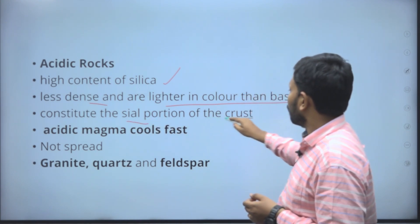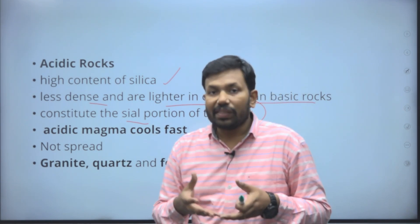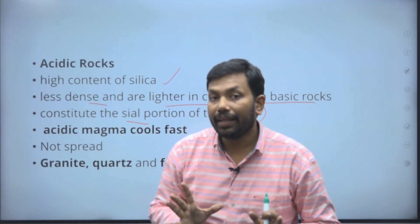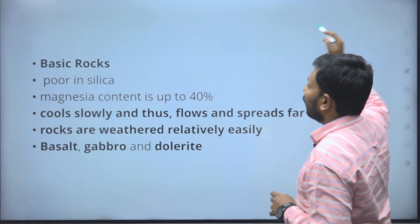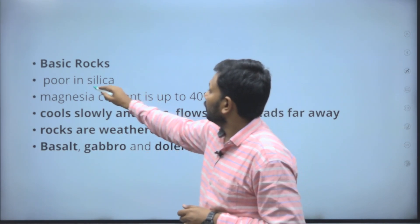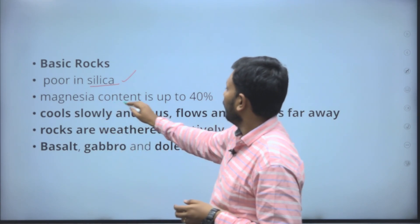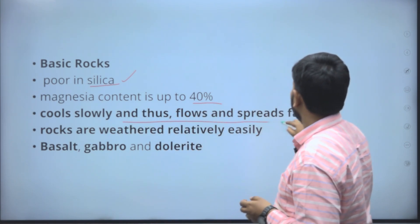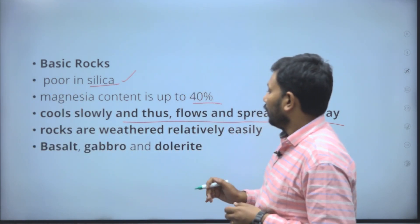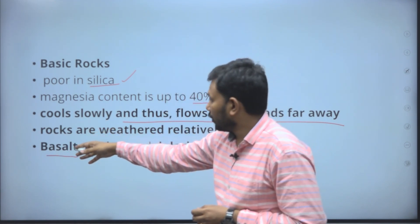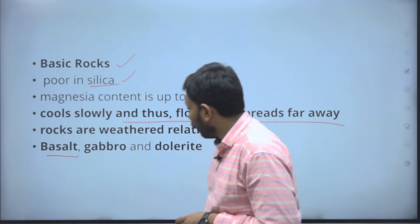Acid rocks contain a larger portion of the crust. Acidic magma cools fast and will solidify then and there — like granite, quartz, and feldspar. Basic rocks are poor in silica; when silica is low, the rock can spread fast, with magnesia content up to 40 percent, cooling slowly and flowing far away — like the Deccan, which is basaltic rock, one of the biggest plateaus formed by fissure eruption. Examples include gabbro and dolerite.